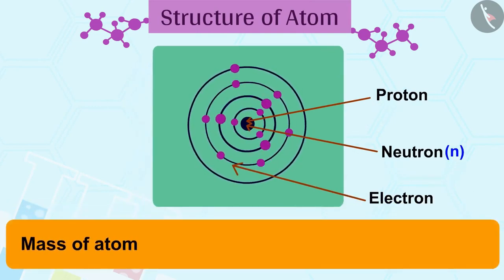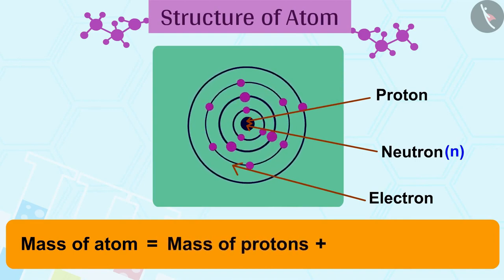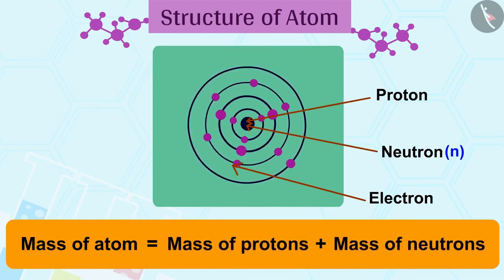The mass of an atom is therefore given by the sum of the mass of protons and the mass of neutrons present in the nucleus.